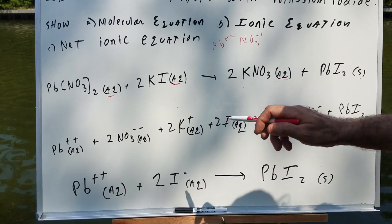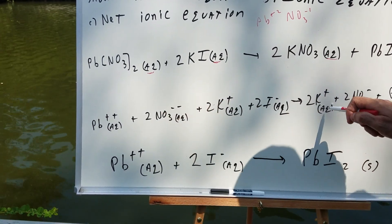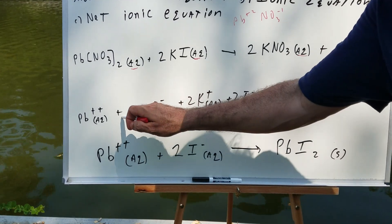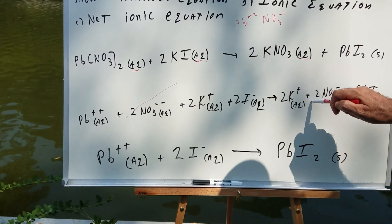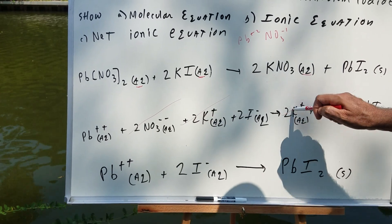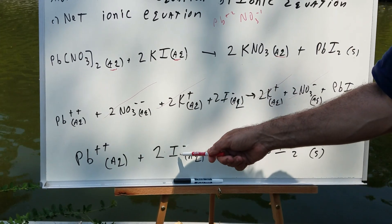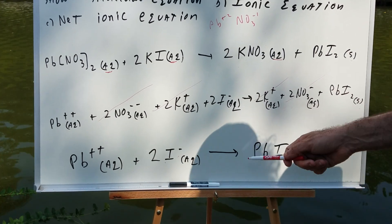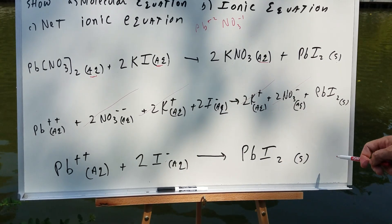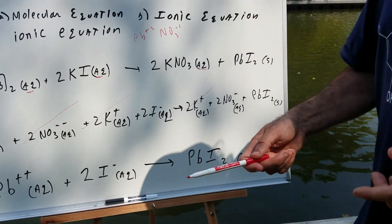The next thing you're going to do to get the net ionic equation is cross out the guys that cross out on both sides, the species. So 2 nitrates cross out with 2 nitrates. 2 potassiums cross out with 2 potassiums. And you're left with Pb+2 plus 2I- gives PbI2 solid. And this would represent the net ionic equation. And that's all there is to it.